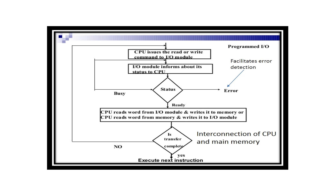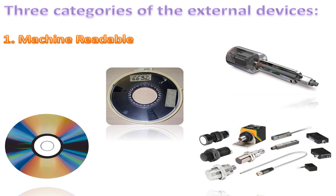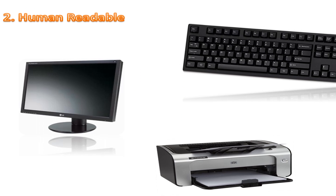The input-output model also facilitates devices with buffer and error detection mechanisms. Input-output models connect various external devices to the processor and memory. There are three categories of external devices. One: machine-readable. These include disk, tapes, sensors, and many more.